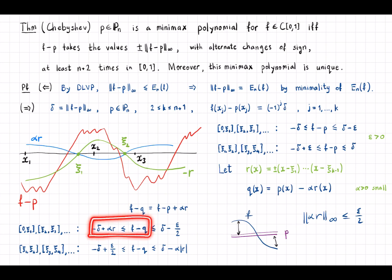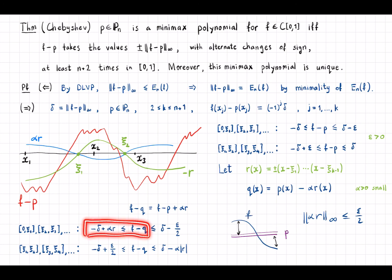On the remaining intervals, because r is strictly positive on (0, ξ₁) and strictly negative on (ξ₂, ξ₃) and so on, we similarly get the error between f and q strictly smaller than delta. This contradicts the fact that p was a minimax polynomial with error delta, so f minus p must really change sign n plus two times — that is, there are n plus two points with differing signs.